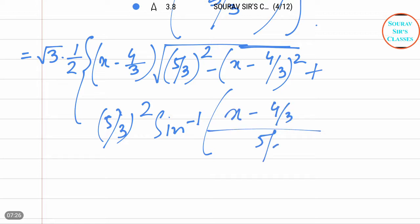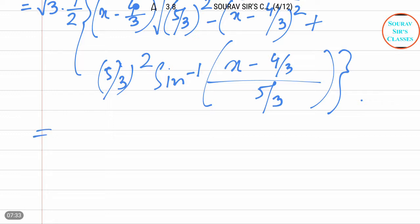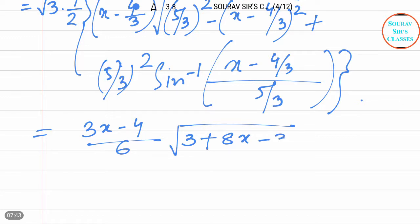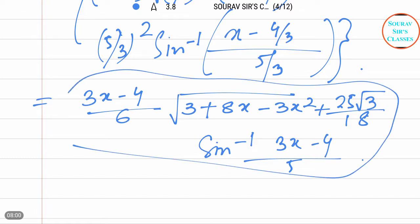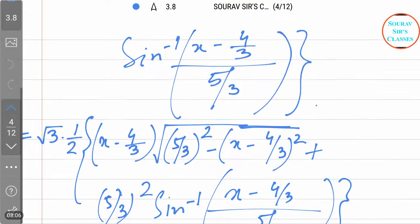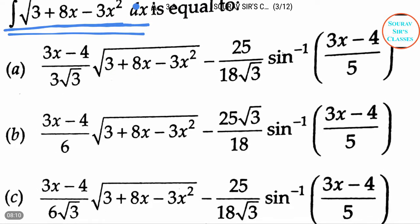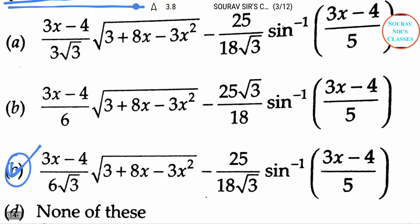From this we can write (3x minus 4) divided by 6 into (3 plus 8x minus 3x²) plus (25 root 3 by 18) into sine⁻¹ of (3x minus 4 by 5). So this is the answer, which is option C. Option C is the correct answer.